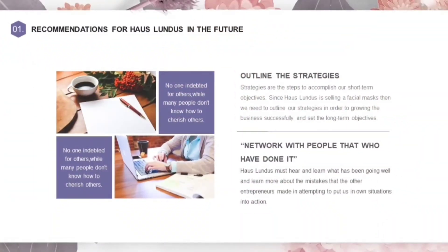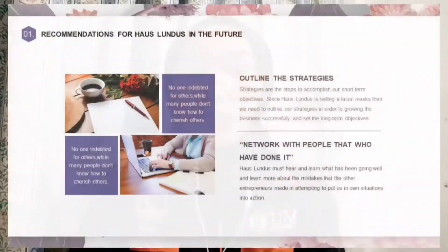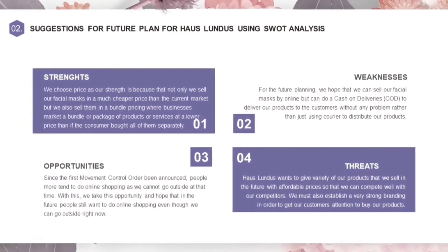As for the recommendations, we have two. The first is to outline new strategies. Since Haus Lundus is selling a facial mask, we must have our own strategies and provide long-term objectives so that we can grow our business in the future successfully. The next is to network with people who have done it — to hear and learn about what has been going on and learn more about the mistakes that other entrepreneurs have made.